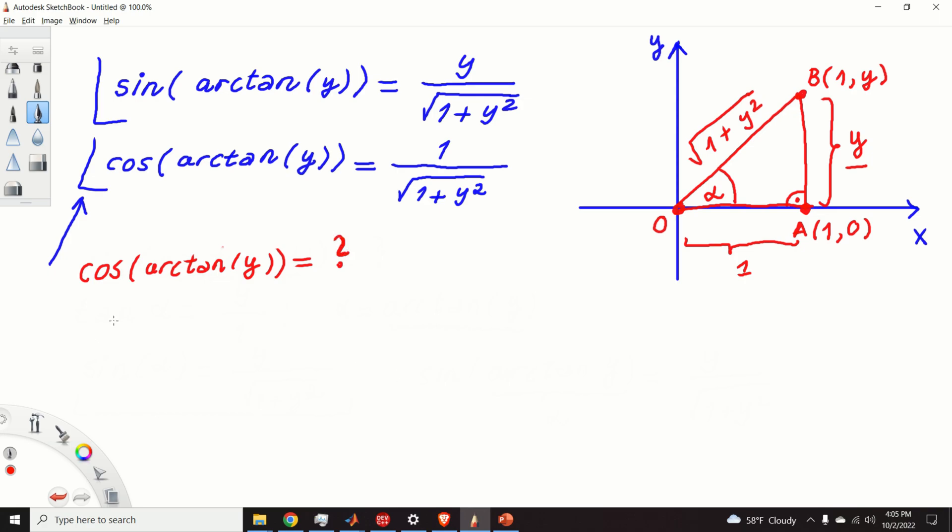So, what is tan(alpha)? Tan(alpha), again, from this triangle here, is y over 1. So, alpha is arctan(y). Now, we need to find cos(alpha).